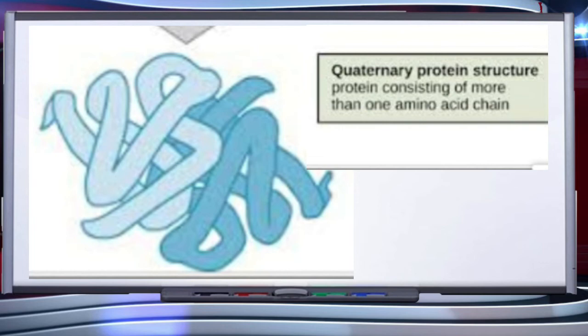Some proteins are an assembly of more than one polypeptide or subunit. The manner in which these individual folded polypeptides or subunits are arranged with respect to each other forms the quaternary structure of a protein. For example, adult human hemoglobin consists of four subunits: two identical alpha units and two identical beta units. So human hemoglobin is made up of two different types of subunits.